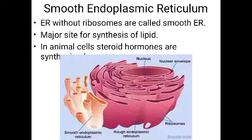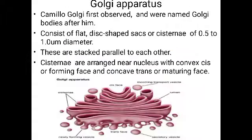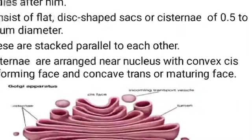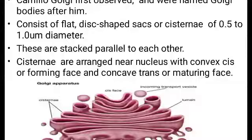Next we can see about the Golgi apparatus, also called the Golgi complex. It was discovered by Camillo Golgi, who first observed it as a densely stained reticulum structure near the nucleus. It is a network structure present near the nucleus, named after the scientist Camillo Golgi.